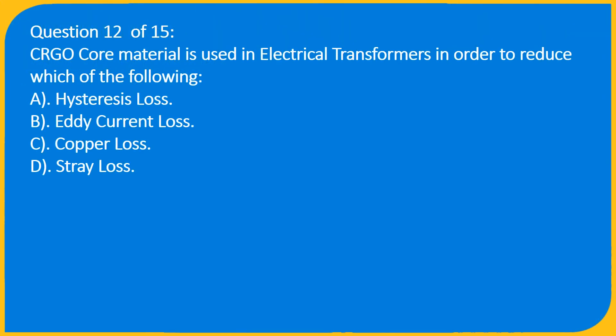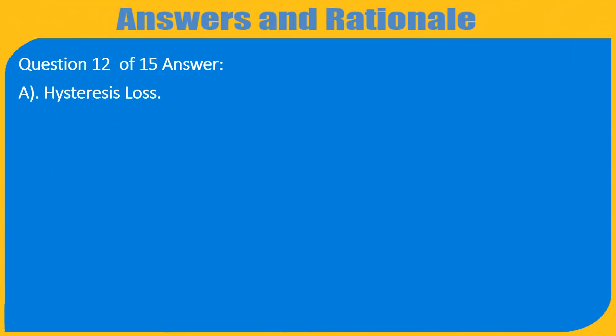Question 12 of 15: CRGO core material is used in electrical transformers in order to reduce which of the following? A. Hysteresis loss. B. Eddy current loss. C. Copper loss. D. Stray loss. Answer: A. Hysteresis loss.